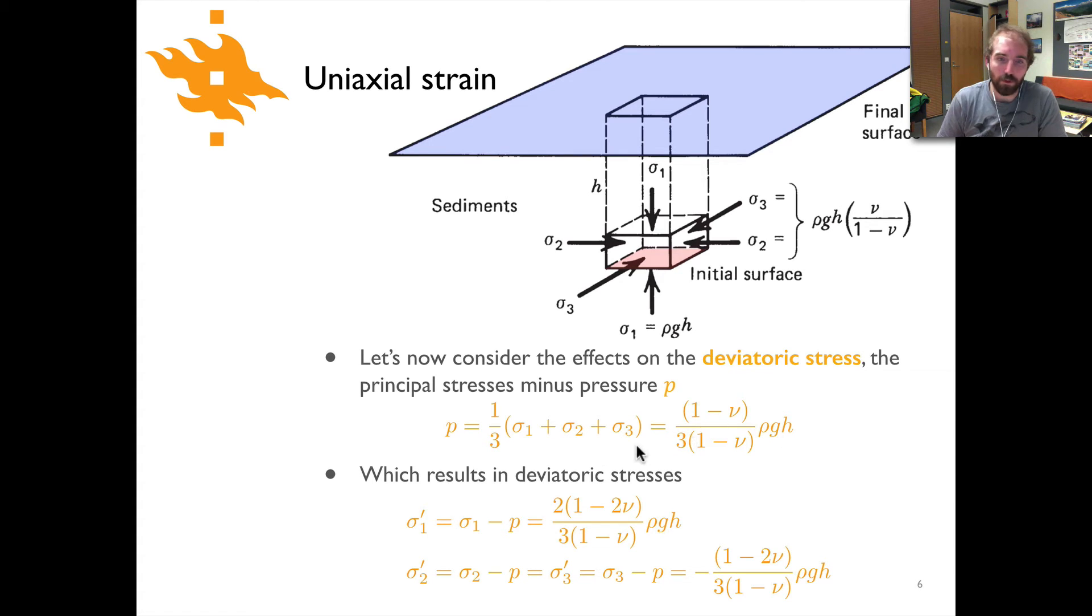So this three coming from the one-third, and that means that if we calculate our deviatoric stresses sigma one prime, sigma two prime, and sigma three prime, we find that sigma one prime is simply sigma one minus p. And we can do the math there, we have sigma one on the previous slide and we have this here, and you end up with this relationship here: two times one minus two nu divided by three times one minus nu times rho gh. Sigma two prime and sigma three prime are equal but the important thing to note here is this: we have a negative sign out in front in this case and it's one minus two nu divided by three times one minus nu times rho gh, but there is a negative sign there.